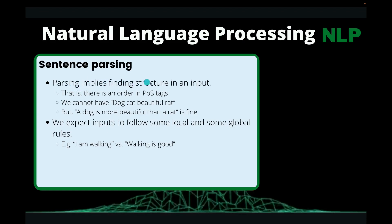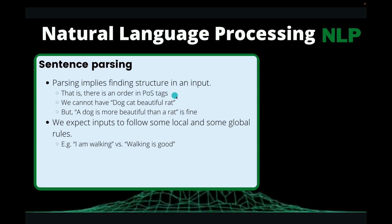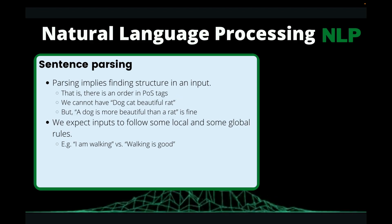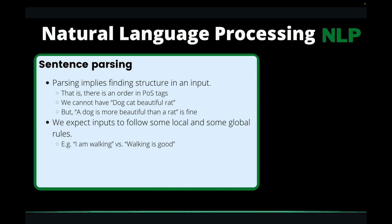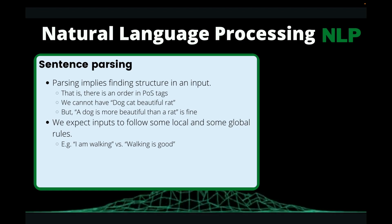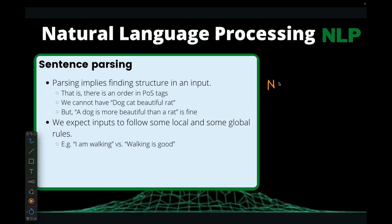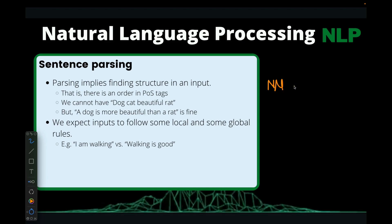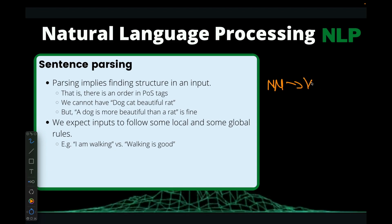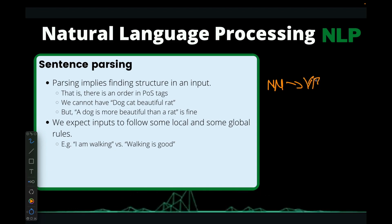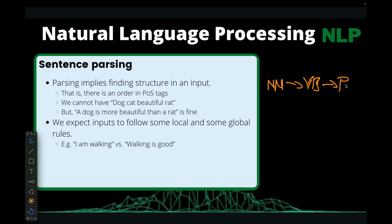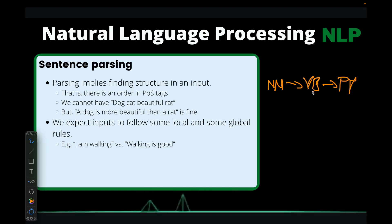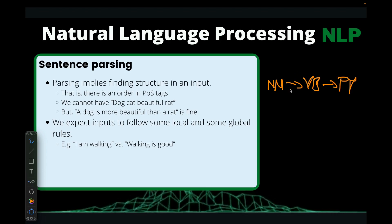Parsing implies finding structure in an input. You have a sentence, and the sentence has some kind of structure in it. For example, you can have a noun — represented with double N — followed by a verb, and maybe followed by something like a preposition. That is the kind of structure that we form together to make sense.